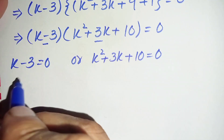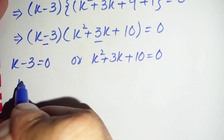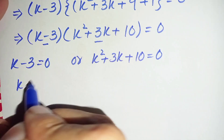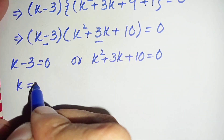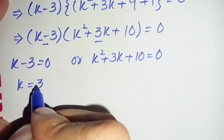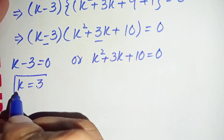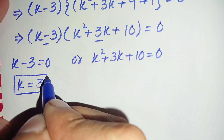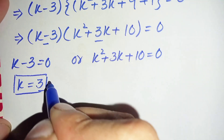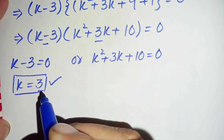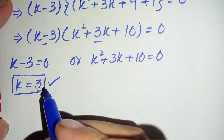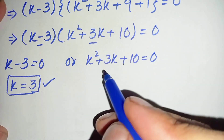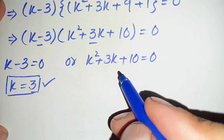First we solve the linear equation. Moving 3 to the right hand side, k is equal to plus 3. So k equals 3 is one of our possible real solutions.